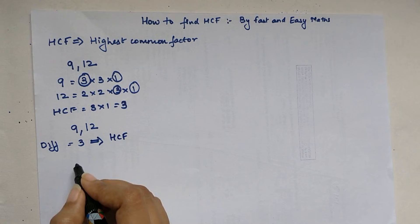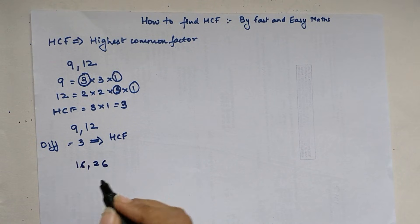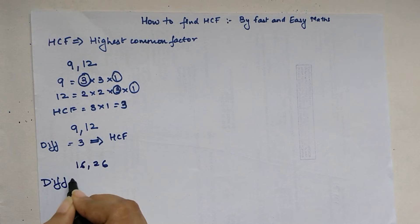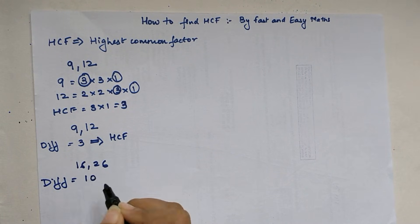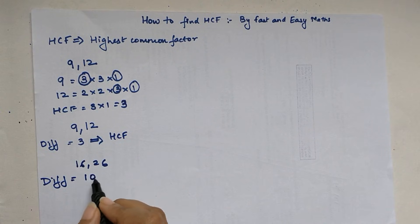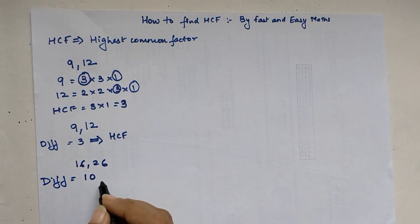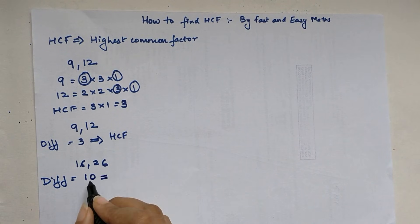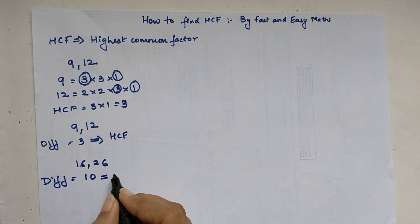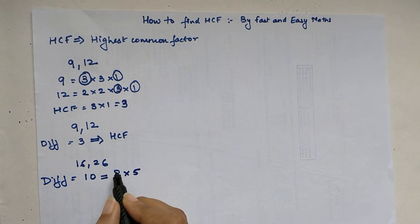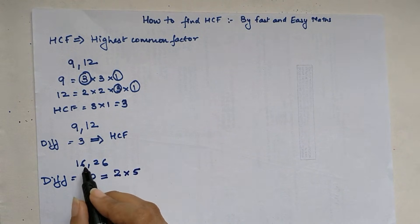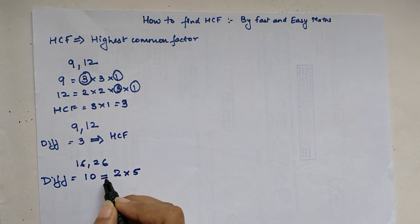Let me show another example with 16 and 26. The difference here is 26 minus 16, which gives us 10. Now let us check whether 10 is a factor of 16 and 26 — no, it is not. In this case, we write the difference in terms of its prime factors, so 10 can be written as 2 × 5.